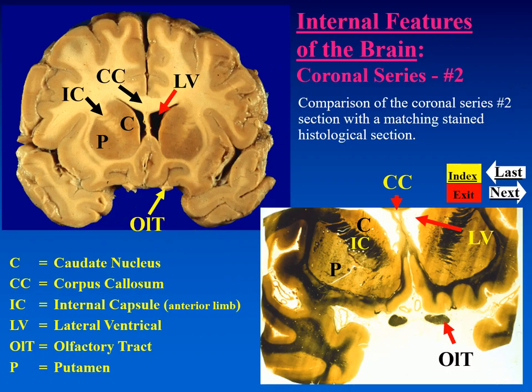In these coronal sections, I have tried to match the preserved specimens with stained coronal sections. You can compare the images from the preserved specimen with those in the stained specimen, such as the corpus callosum, the caudate nucleus, internal capsule, and putamen. One other feature is the olfactory tract seen in the most inferior part of this stained specimen, and just above that, two elliptical structures — the anterior cerebral arteries cut in this section.